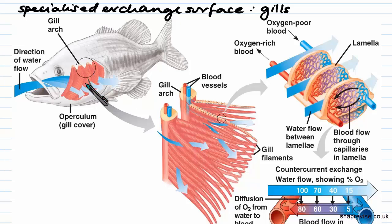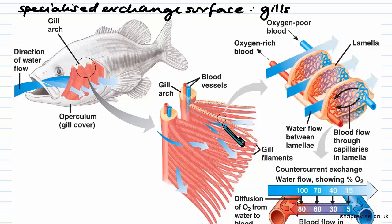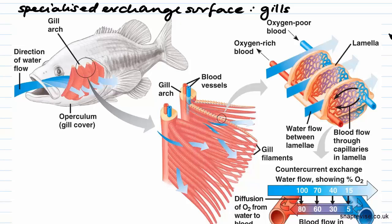Here we can see some gill arches, and off of these gill arches come gill filaments. They are all stacked up on top of each other, and when you look closely at the gill filaments they contain gill lamellae. One is called a lamella, many are called lamellae, and these are lined up perpendicular to the actual filaments.